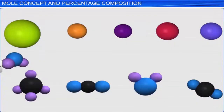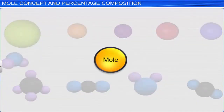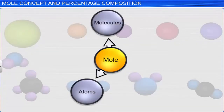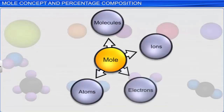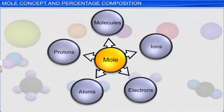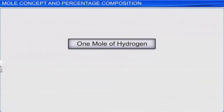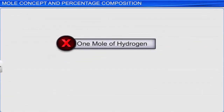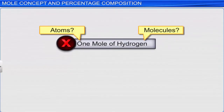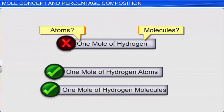The term mole is used to count particles such as atoms, molecules, ions, electrons and protons. Hence, we must indicate the nature of the particle under observation. For example, saying one mole of hydrogen would be incorrect. We need to specify the entity we are referring to — that is, hydrogen atoms or hydrogen molecules. Thus, the correct term would be one mole of hydrogen atoms or one mole of hydrogen molecules.